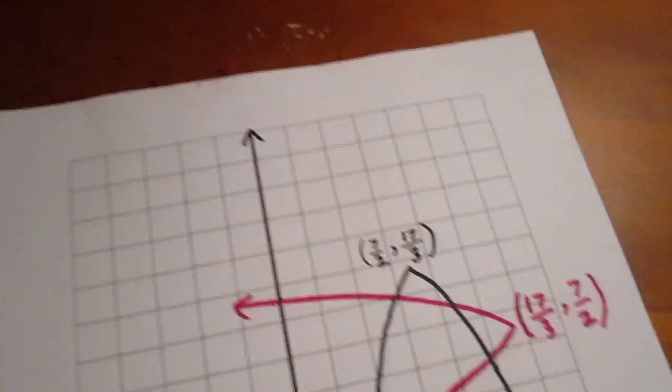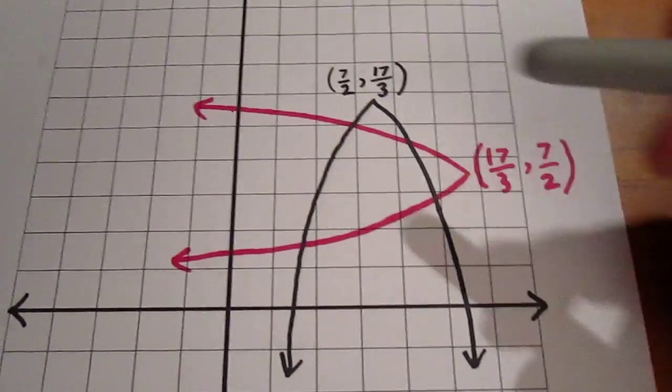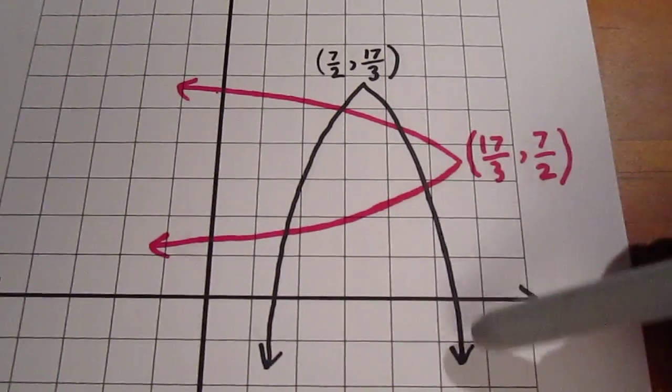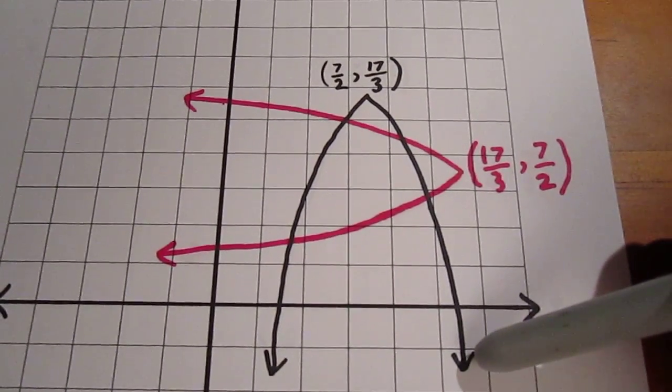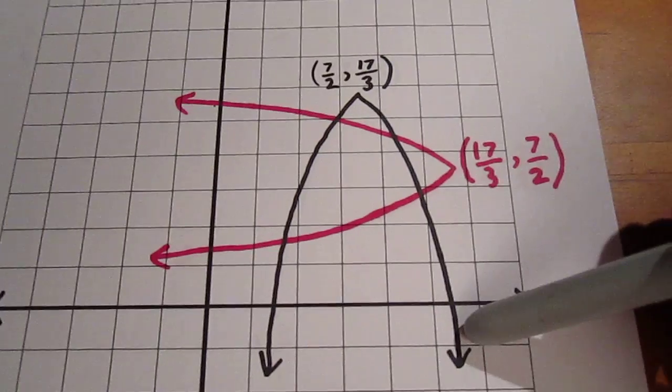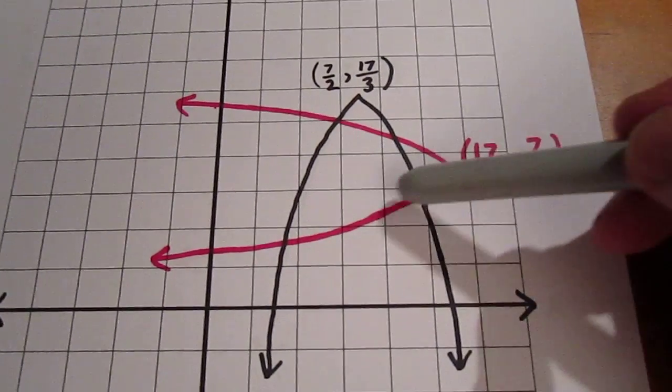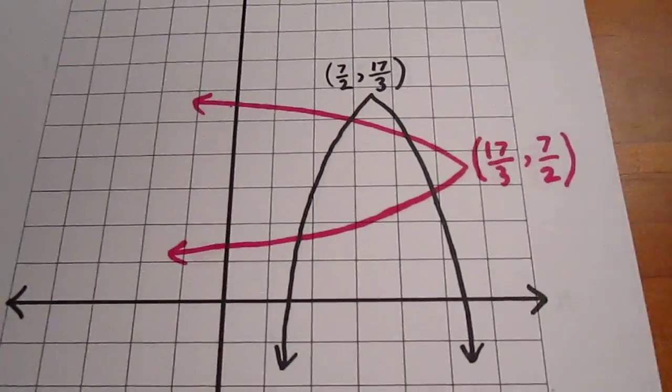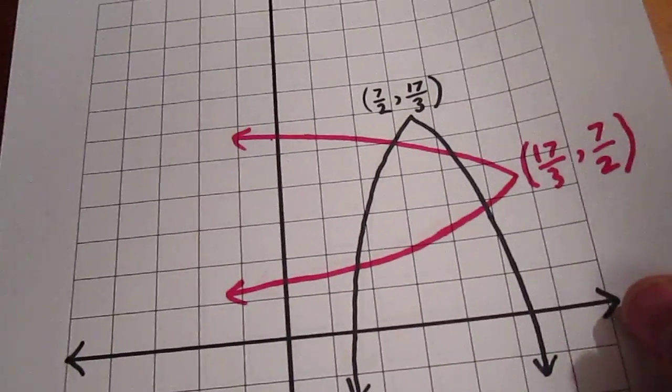If we choose to view the original function, the black downwards turning parabola, if we find its inverse, we get a sideways opening parabola, the red one, and we see that it is not a function. So we have to make one of the restrictions we showed earlier.